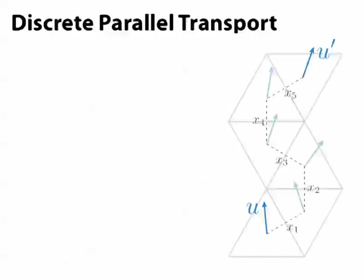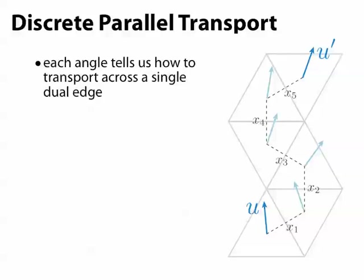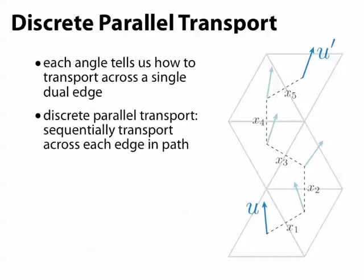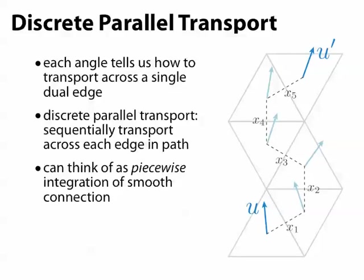Now that we know how to transport vectors from one triangle to a neighboring triangle, transporting along a whole path is not very difficult. We just apply transport to each of the dual edges in our path in sequence. You can really think of this as just piecewise integration of some smooth connection.